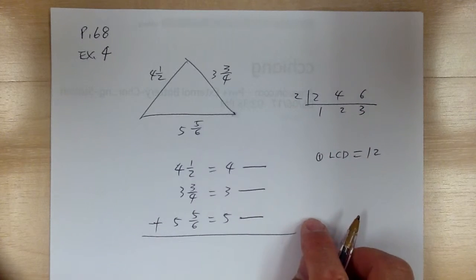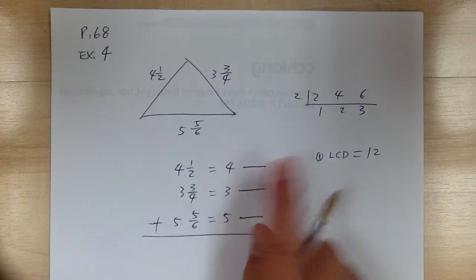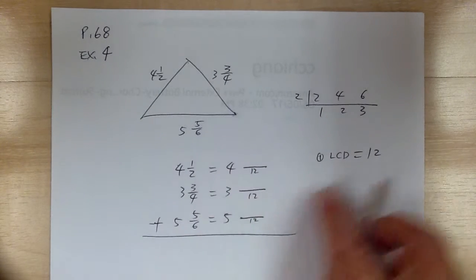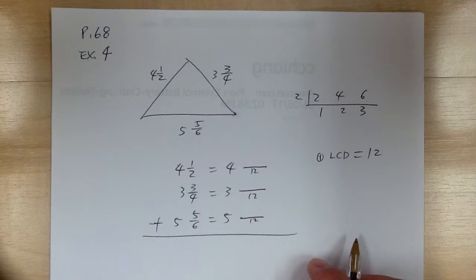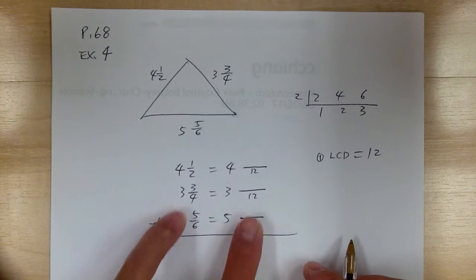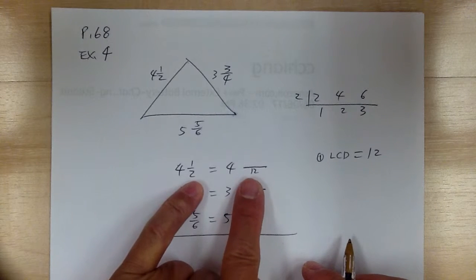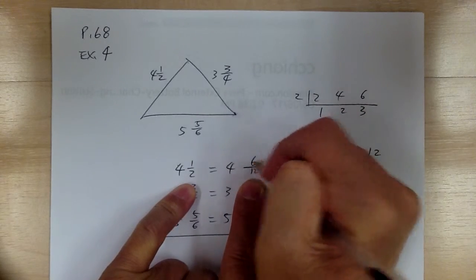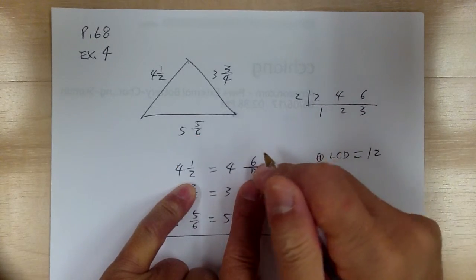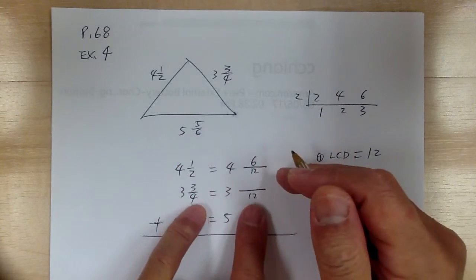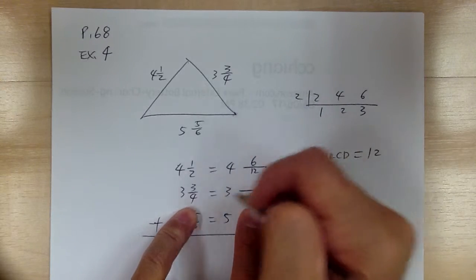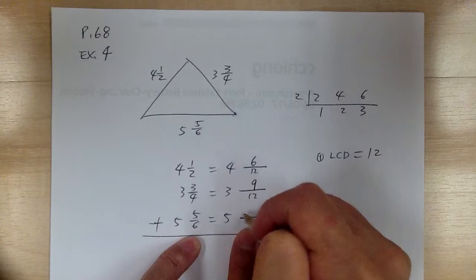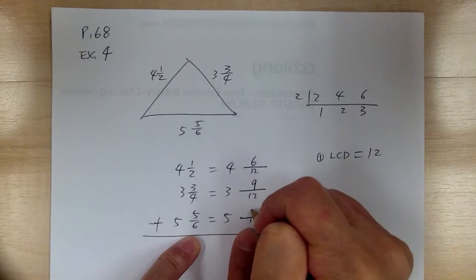Step 2 is get all denominators equal to 12, just like the previous lesson. Step 3 is figure out what you need to multiply. This one needs to multiply by 6. From here to here, multiply by 6. From here, multiply by 3 — so 3 times 3 gives you 9. Over here, multiply by 2 — so 5 times 2 gives you 10.